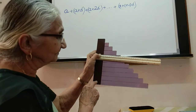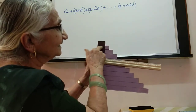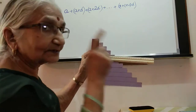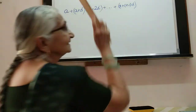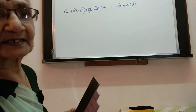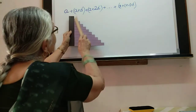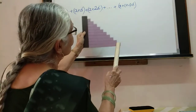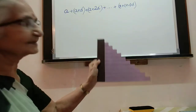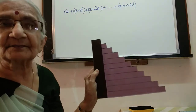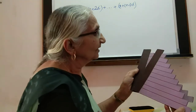In the first term there are no d's, in the second one d, and in the nth term it will be n minus one d's. So the last term is a plus (n-1)d. The sequence is: a, a+d, a+2d, ..., a+(n-1)d. The sum we are looking for is exactly the sum of these terms.